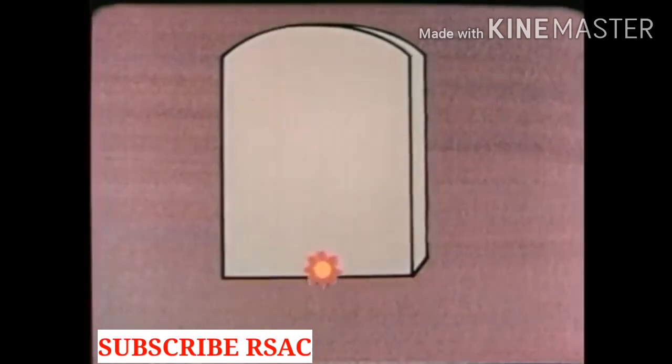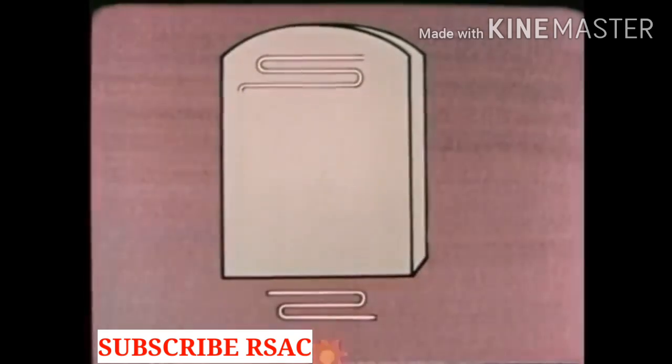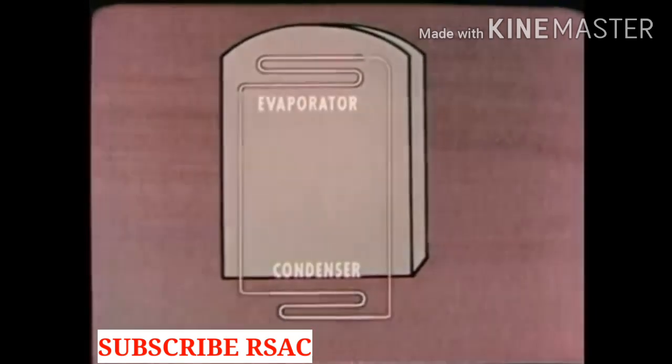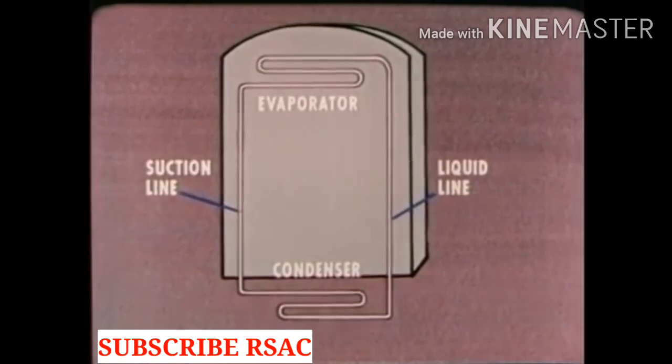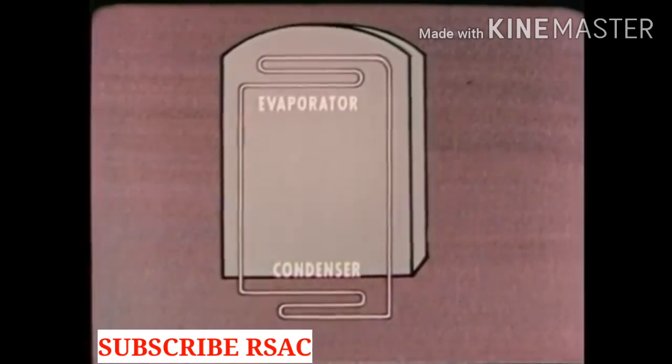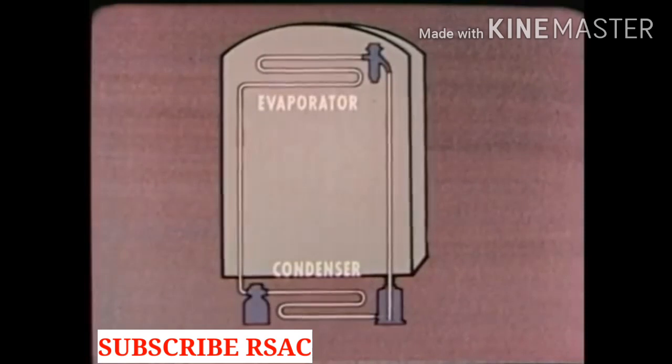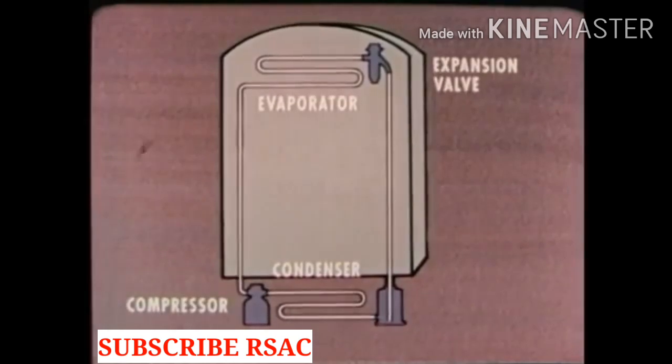Refrigeration is the transfer of heat from a place where it is not wanted to a place where it is unobjectionable. To do this, a refrigerator uses a unit inside the box that takes up heat and a unit outside the box that gets rid of it. These units are called the evaporator and the condenser. They are tied together by connecting lines referred to as the suction line and the liquid line.